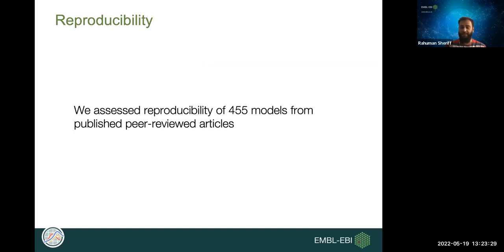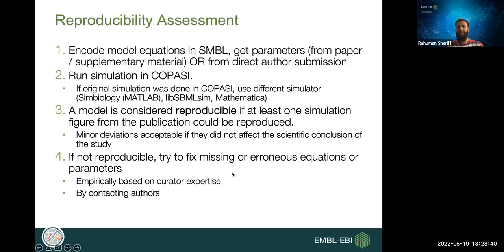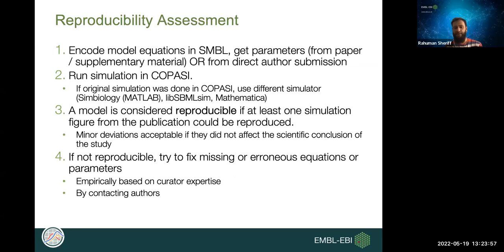We assessed about 455 models from peer-reviewed publications to determine whether they are reproducible. The process: we encode model equations in SBML as part of BioModels' curation process, obtain parameter values from the manuscript or supplementary material, and sometimes receive models via auto-submission. Once the model is ready, we run it in COPASI. If the model was originally built in COPASI, we use different tools — MATLAB Simbiology Toolbox, LibSBML, or Mathematica.